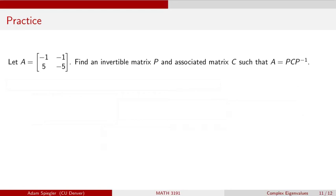Welcome everybody. In this video, we are going to work with a 2 by 2 matrix A, which we'll find has complex eigenvalues. What we want to do is identify an invertible matrix P and an associated matrix C, which is going to have a little bit more symmetry, so that we can identify that A is similar to this matrix C, and we're able to convert from one to the other by multiplying by P and its inverse.